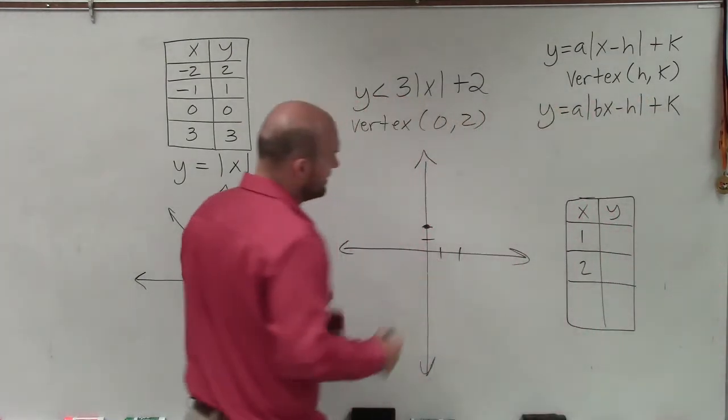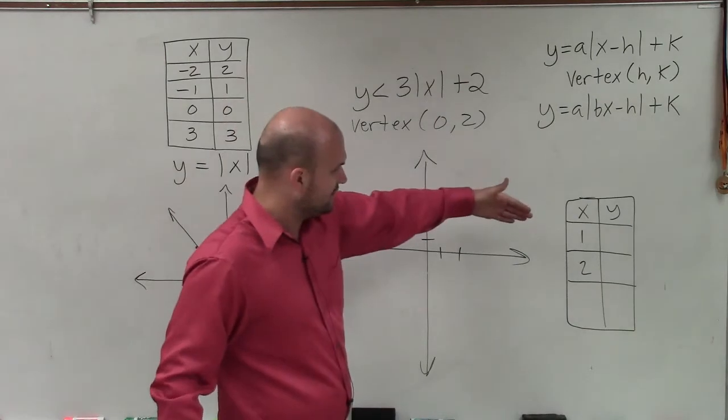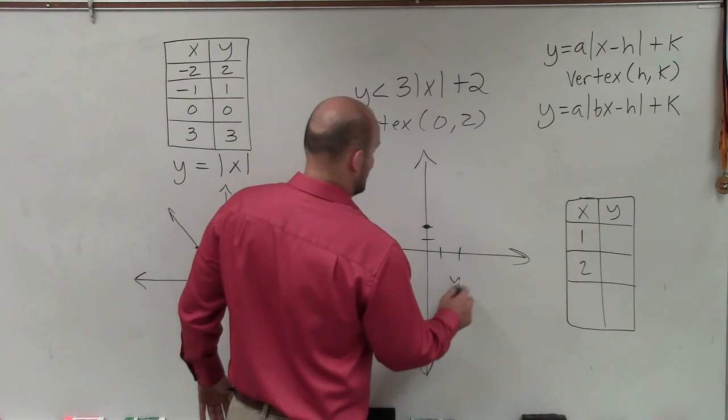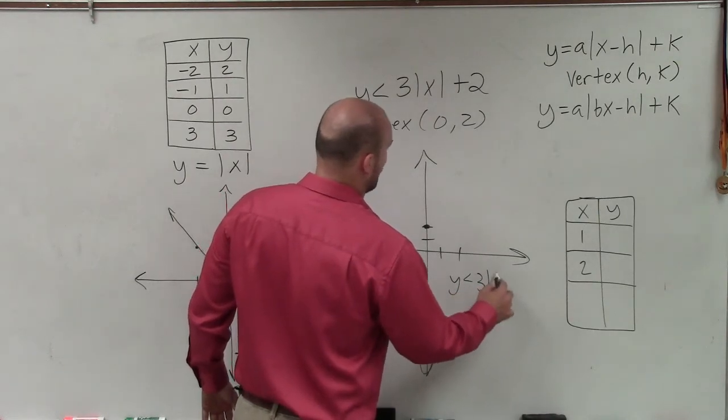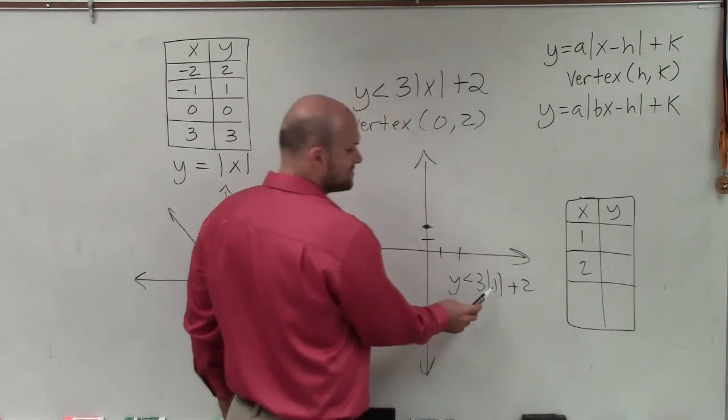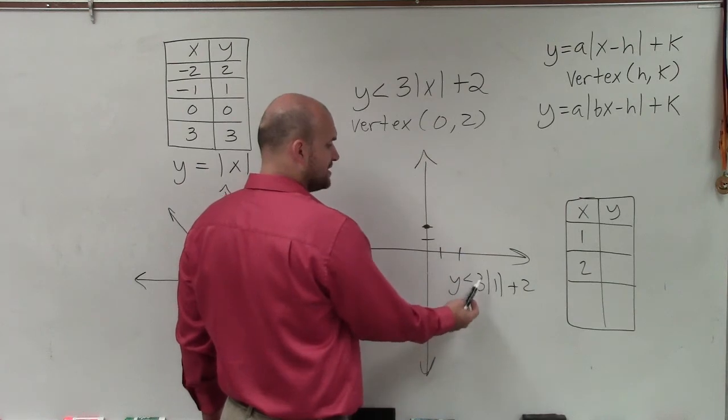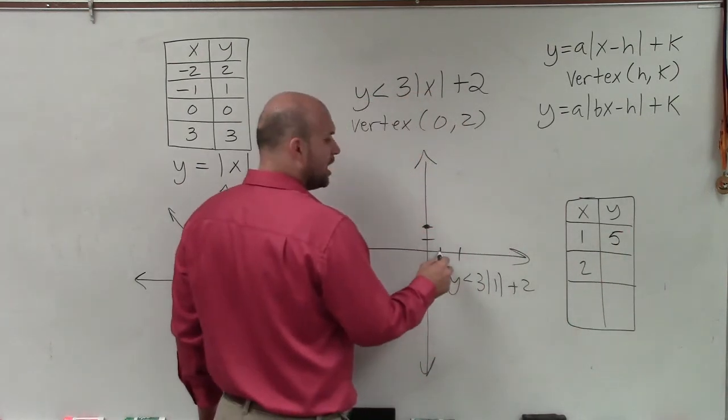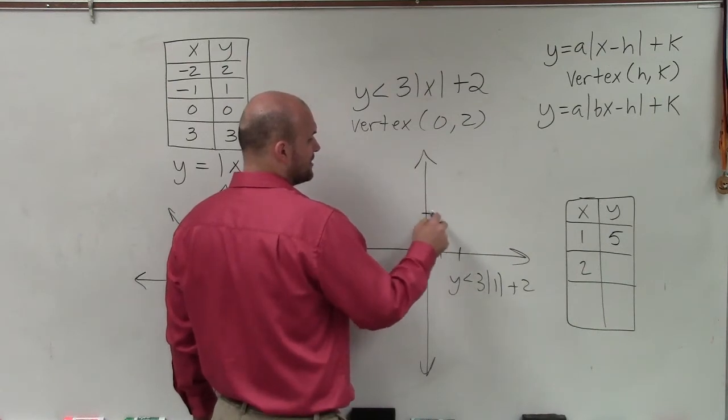So what we want to do to evaluate what the y value is, we're just going to plug in one in for x and solve. So I'd have y is less than three times the absolute value of one plus two. Well, the absolute value of one is one. One times three is three. Three plus two is five. So I go over one, up five.